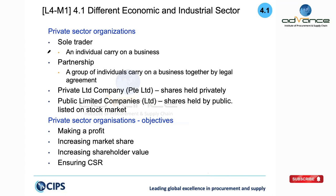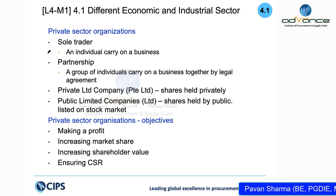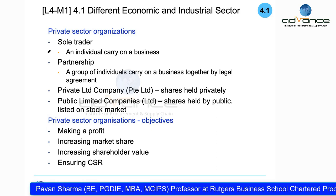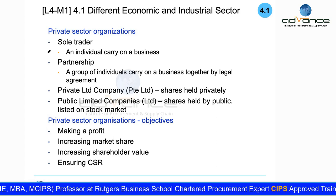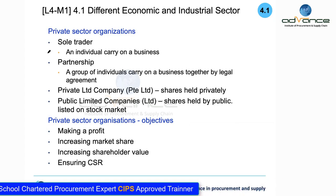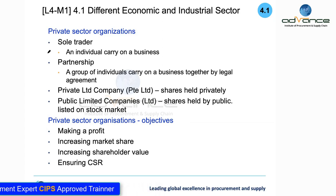In the private sector, you can have a sole trader — a single person setting up and running a business, like a small coffee shop or a large restaurant. You can have a partnership — a group of people coming together, each contributing their expertise. In Singapore and most countries, you can have a maximum of 20 partners. Examples include legal firms, networks of clinics, accounting firms, and consulting companies, which all typically operate as partnerships.